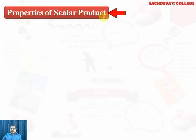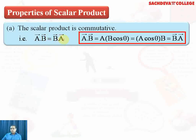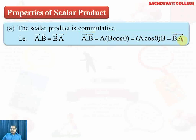We will go through the properties of the scalar product. The first property: the scalar product is commutative. To explain — commutative means if we take two numbers X and Y, then XY equals YX. Here, the dot product of two vectors A and B will be equal to the dot product of B and A. The scalar product A·B equals AB cos theta, or A cos theta into B, and in vector form, it can be written as vector B into vector A.